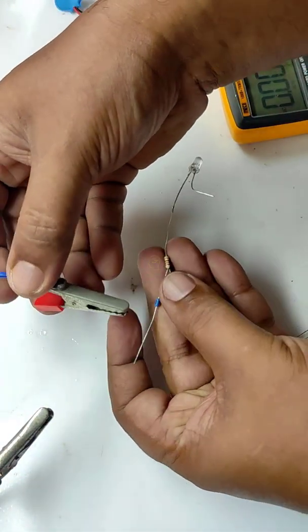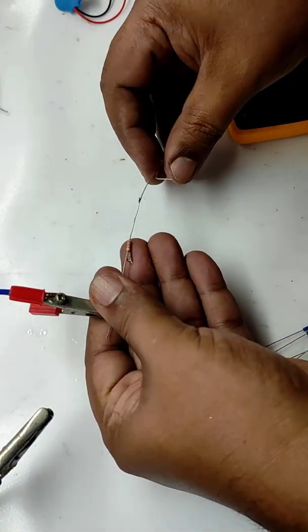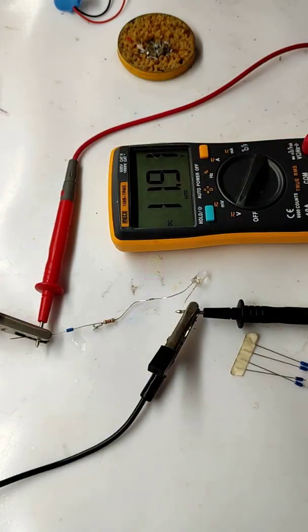We will gradually increase the voltage and simultaneously measure the input voltage. You can see the input voltage is now nearly 12 volts and we are increasing its voltage range.